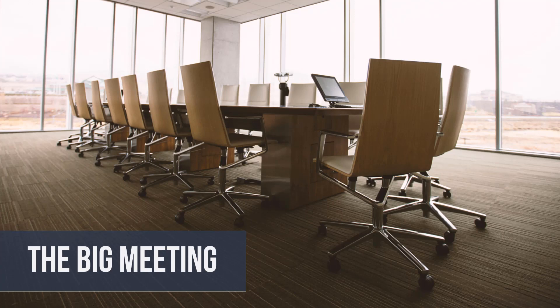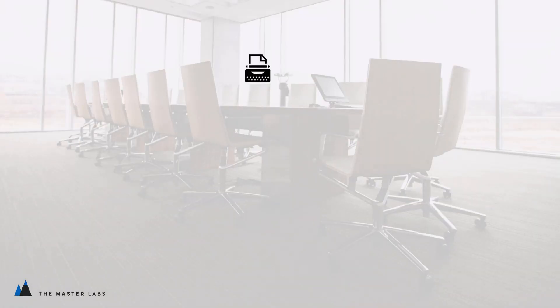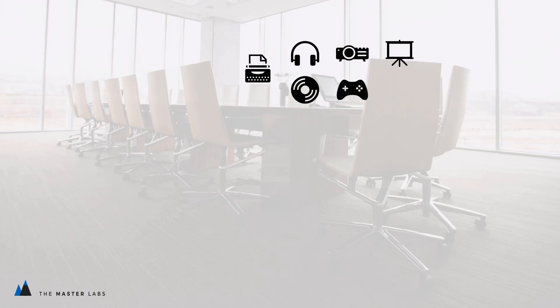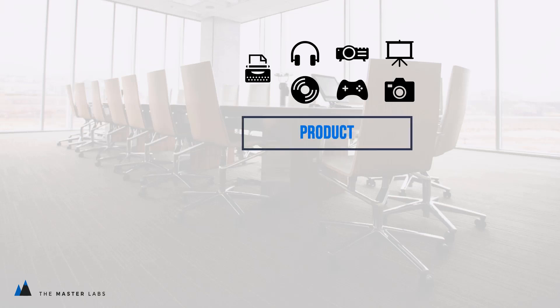So you've probably taken some notes by now. Let's look at the products first — these clients sell a lot of things: typewriters, headphones, beamers, screens, vinyl records, games and cameras. For each of these products they keep a name, a price, a description and a stock quantity.